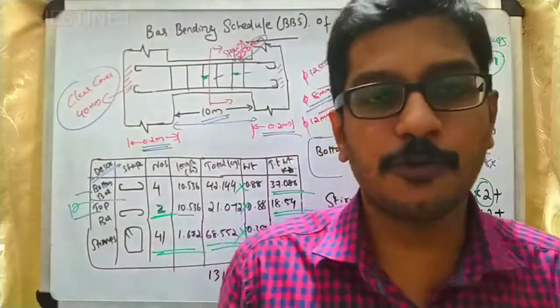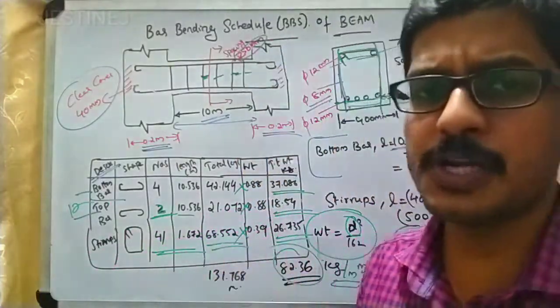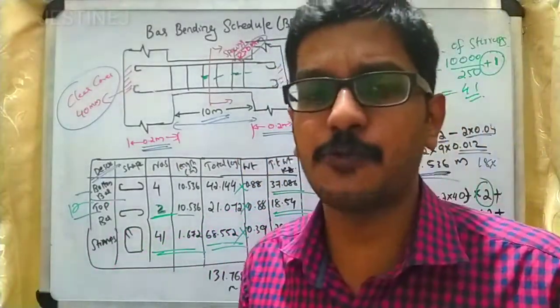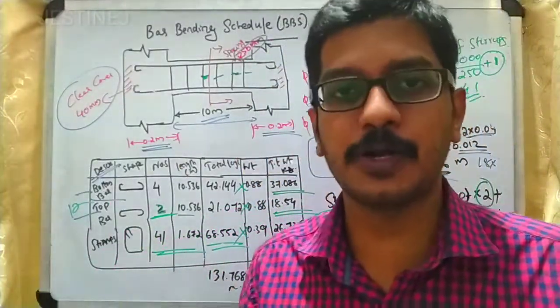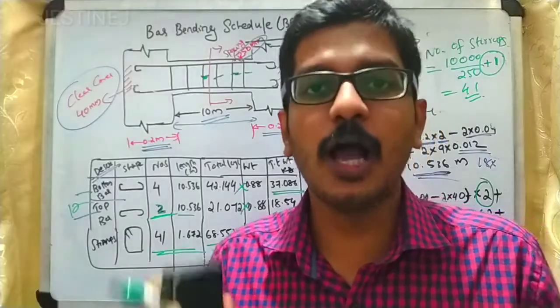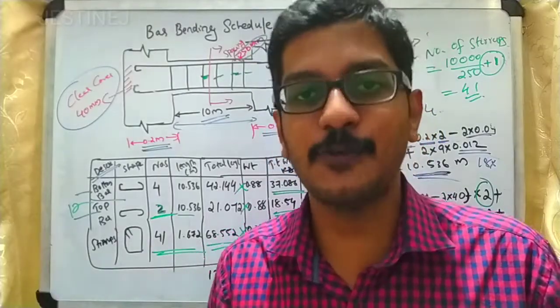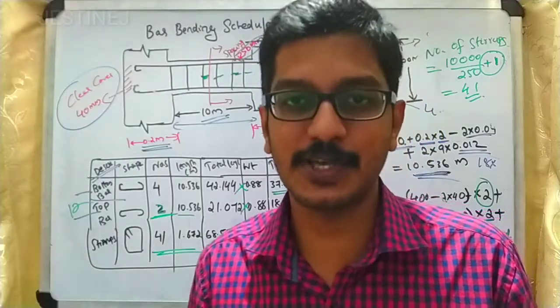Adding up all values, the total quantity of steel required is 131.768 meters in length and 82.36 kilograms in weight. This is the final procedure for finding the quantity of steel reinforcement for a particular construction work. I hope the session is clear — thank you.